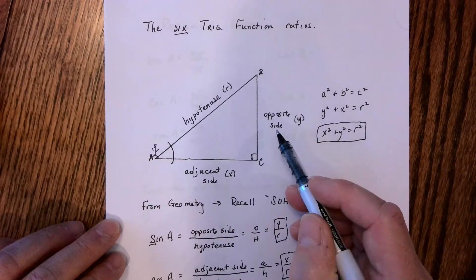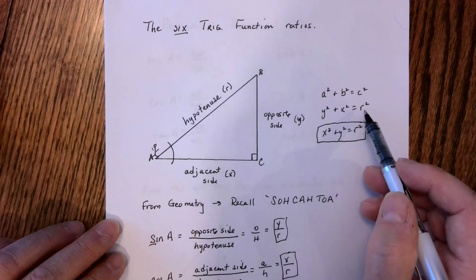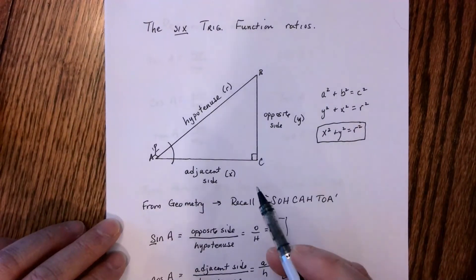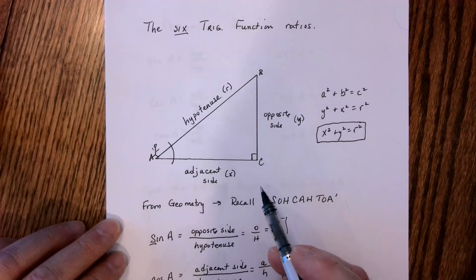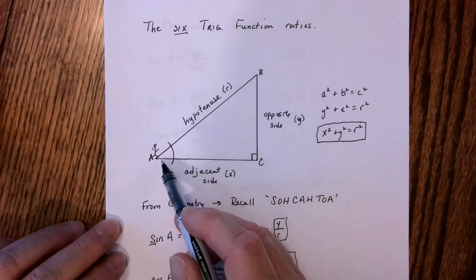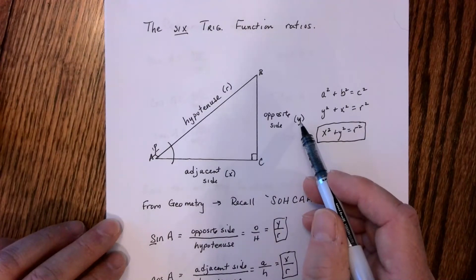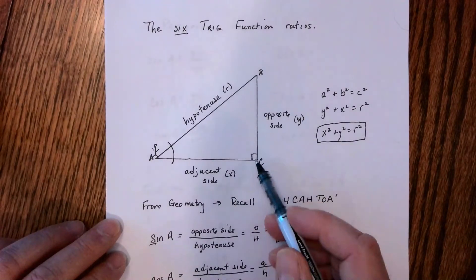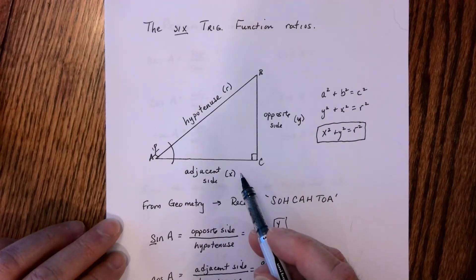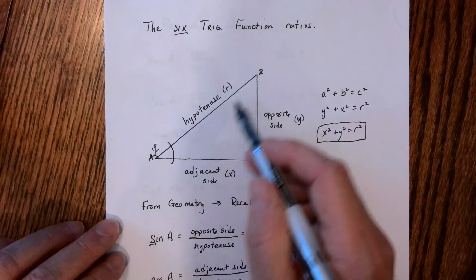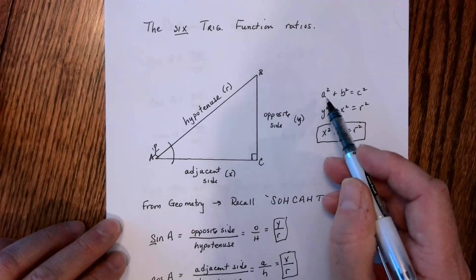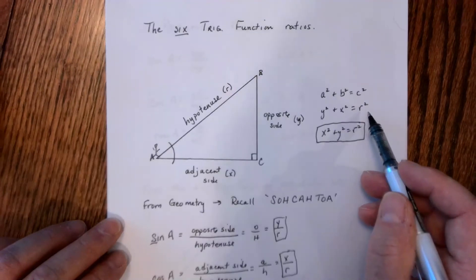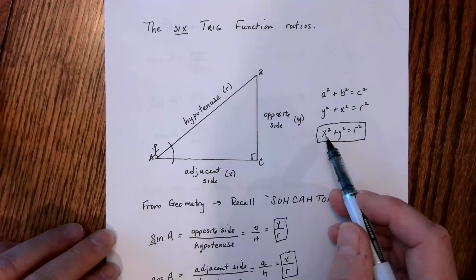Now we're going to extend our discussion. We're going to take Pythagorean's Theorem and extend it to x, y, and r. We can then apply it to an x, y coordinate system — that's called a rectangular coordinate system. Wherever x and y intersect, it forms a 90 degree angle. The opposite side of angle A we could call y, and the adjacent side we could call x — the vertical side and the horizontal side. If this was a point on the circle, this would be the hypotenuse or the distance from the center to the circle. The Pythagorean Theorem translates to x squared plus y squared equals r squared.